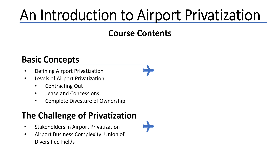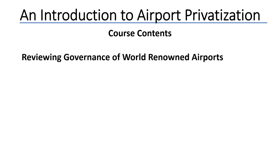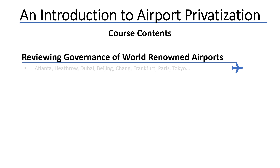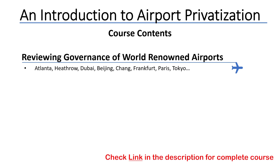After that, we will move on to review governance of world-renowned airports. This section will contest your preconceived notions on airport governance by introducing some of the world-famous airports like Atlanta, Heathrow, Dubai, Beijing, Changi, Frankfurt, Paris, and Tokyo, and revealing their ownership form — that is, whether they are state-owned or privately-owned.